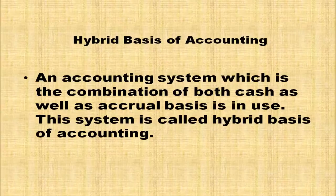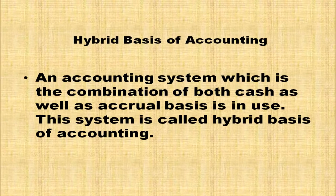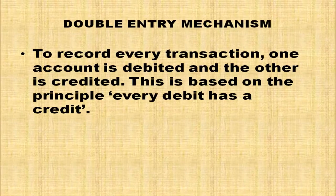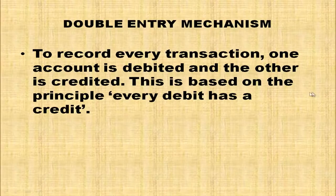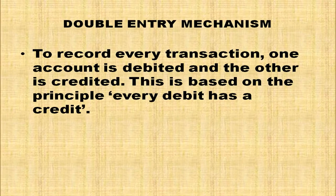There is one more basis of accounting — hybrid basis of accounting — which is a combination of both cash and accrual basis. One more key term: Double Entry Mechanism or Double Entry System. To record every transaction, one account is debited and the other is credited. This is based on the principle that every debit has a credit.